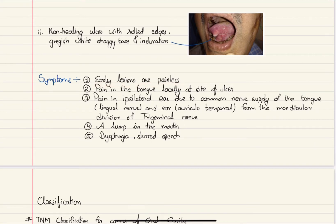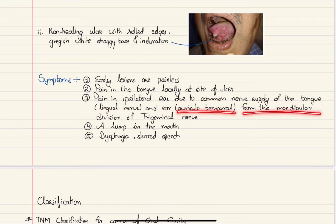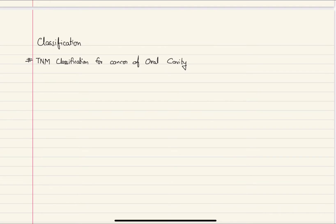Early lesions are painless, hence most cases remain asymptomatic. There can be pain in the tongue locally at the site of the ulcer. Pain in the ipsilateral ear can be felt due to the common nerve supply of the tongue — the lingual nerve and the auriculotemporal nerve from the mandibular division of the trigeminal nerve. There can also be a feeling of a lump in the mouth, dysphagia, and slurred speech.